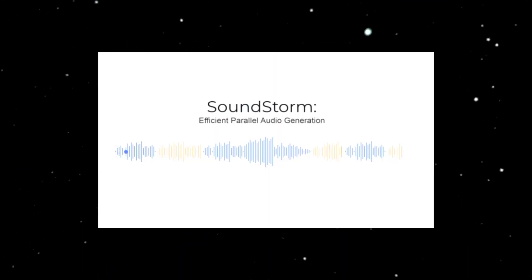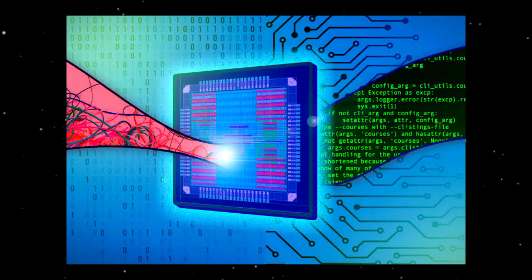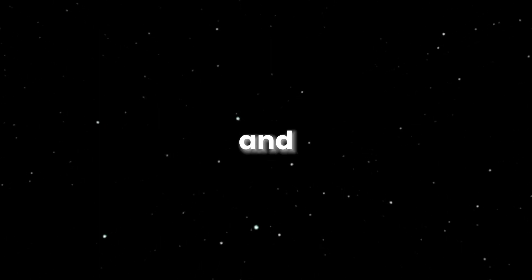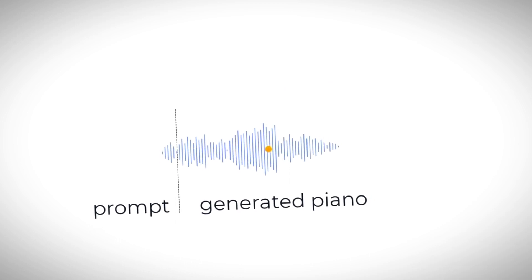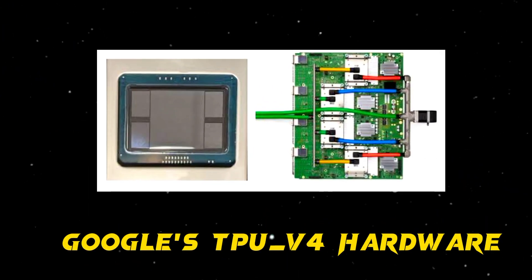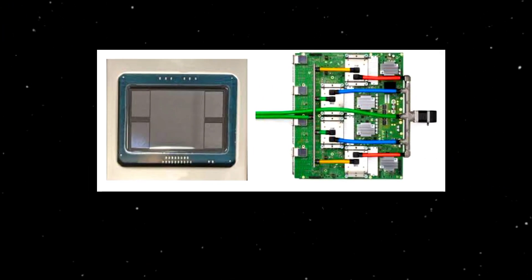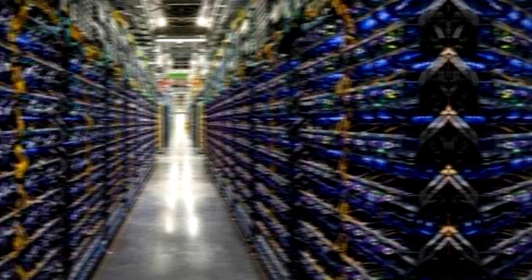Soundstorm employs a groundbreaking architecture that sets it apart from its predecessor, Audio-LM. By generating audio in 30-second chunks, the model achieves remarkable efficiency. The utilization of bidirectional attention and confidence-based parallel decoding not only ensures high-quality audio output, but also drastically reduces the time required for generation. On Google's TPUv4 hardware, Soundstorm can generate 30 seconds of audio in a mere 0.5 seconds, an astonishing feat that showcases its exceptional speed and efficiency.